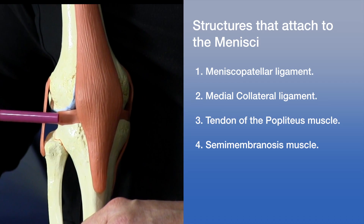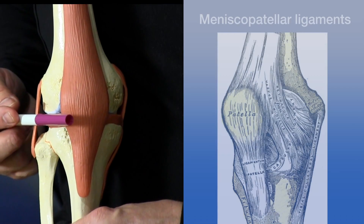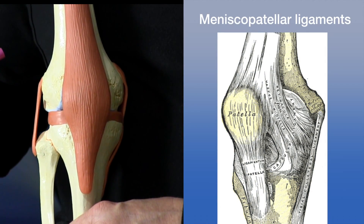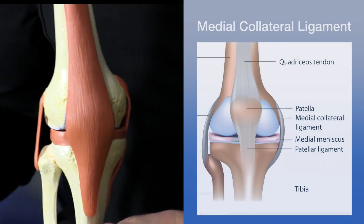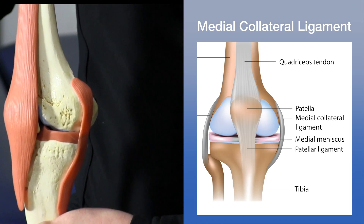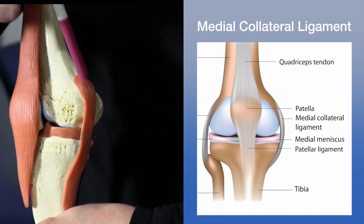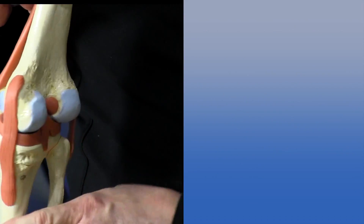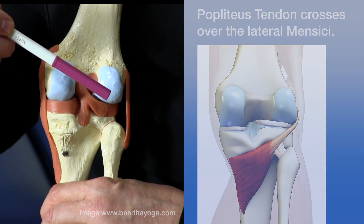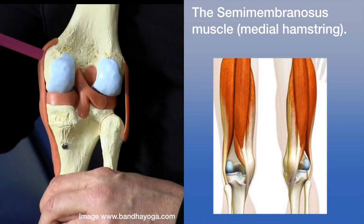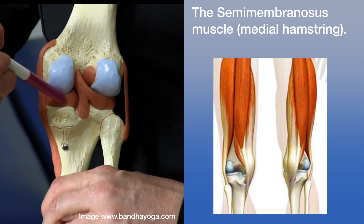Looking from the outside, we have the lateral meniscus and the medial meniscus. There are ligaments that attach from the menisci to the patella called the meniscal patellar ligaments. The medial collateral ligament on the side actually has a section that attaches directly onto the menisci. Posteriorly, a muscle called the popliteus crosses over the back and attaches onto the menisci, and a hamstring muscle called the semimembranosus also attaches onto the medial meniscus.